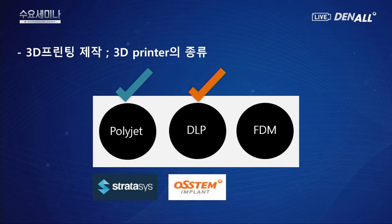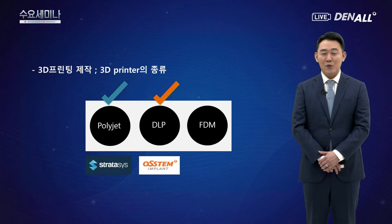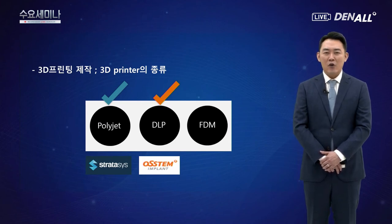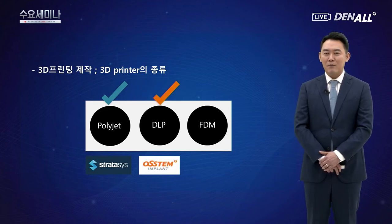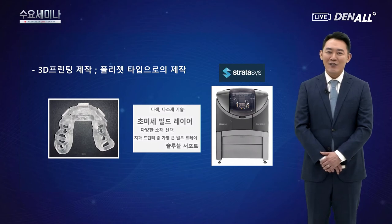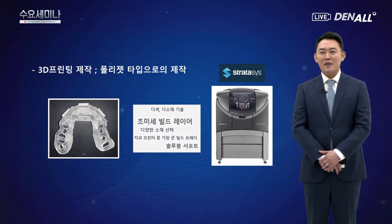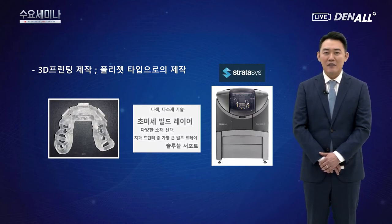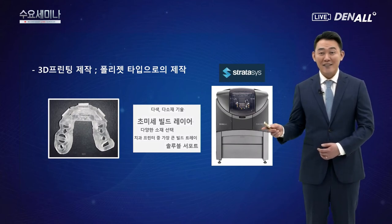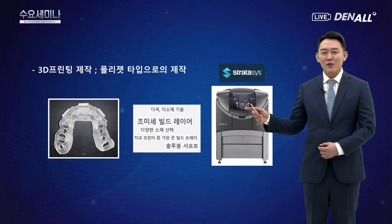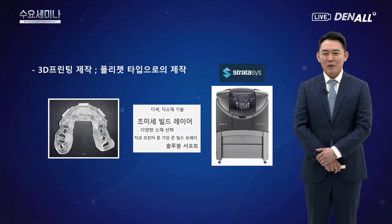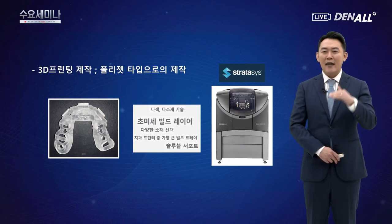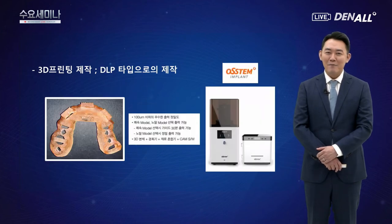원가이드 센터에서 공식적으로 사용하는 방식은 폴리젯 방식으로, 스트라타시스의 Objet260 3D 프린터로 제작합니다. 폴리젯 방식은 액상 광경화성 수지를 노즐에서 분사하고 광에너지를 이용해 굳히는 적층 방식으로, 잉크젯 프린터의 3D 버전이라 생각할 수 있습니다. 다색, 다소재 기술로 미세하게 레이어를 적층할 수 있고 다양한 소재를 선택할 수 있다는 장점이 있습니다.